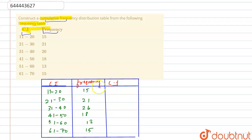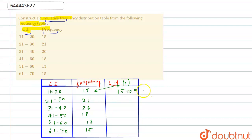The cumulative frequency is the sum of the current frequency plus the previous cumulative frequency. Initially, we don't have any cumulative frequency, so we will take it as 0. So for the first interval, the cumulative frequency will be 15 plus 0, which equals 15.